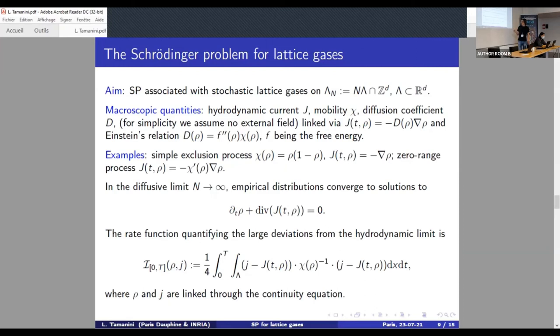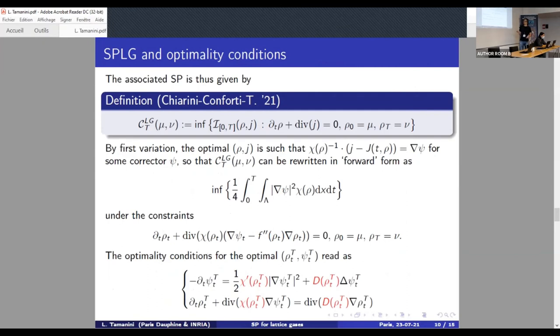Well, having a rate function, the Schrödinger problem is nothing but the minimization of such a rate function among all solutions of the continuity equation satisfying the initial and final constraint. And let me just stress once more that the argument is purely heuristic. What is not difficult to see is that this term which appeared in the previous rate function here, along the optimal solution has to be of gradient type, so that again it is possible to rewrite this Schrödinger problem as a control problem.